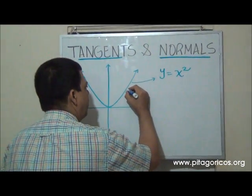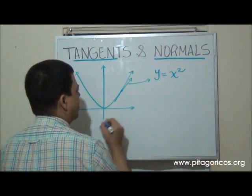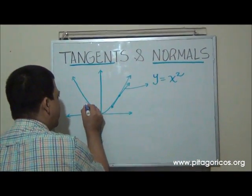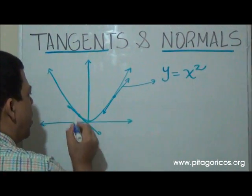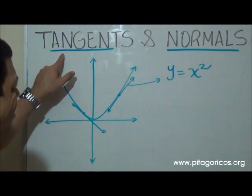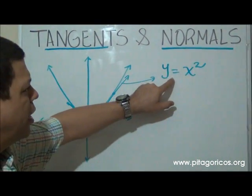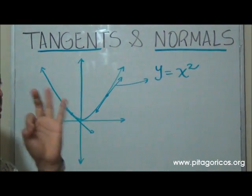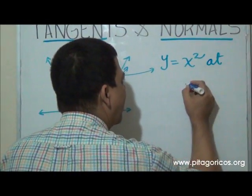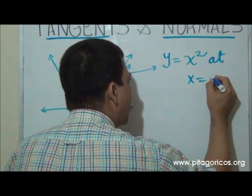For example, if the point is here, then this would be the tangent. But if the point is here, the tangent would be completely different. So if the exercise says that we have to find the tangent to this curve, y equals x squared, we need a point. They have to give us a point. Let's say that the point is at x equals, let's say 1.